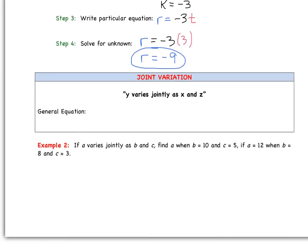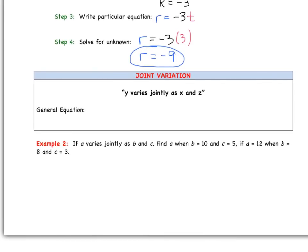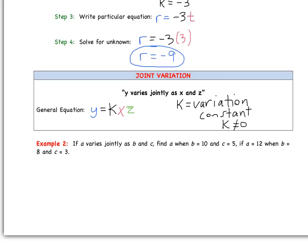The next variation function is joint variation. The phrase we will see here is 'Y varies jointly as X and Z.' X and Z go together, so our general equation is Y equals K times X times Z, where K is the variation constant and K cannot equal 0.